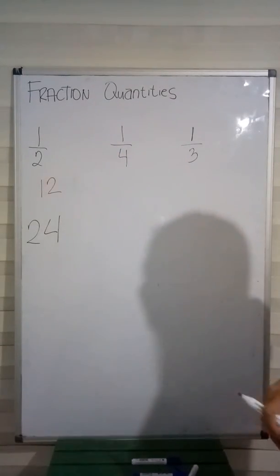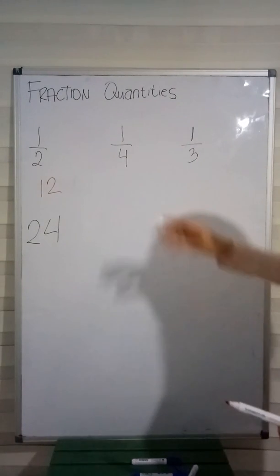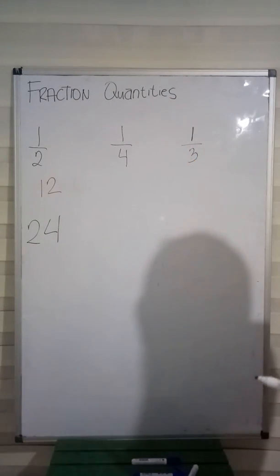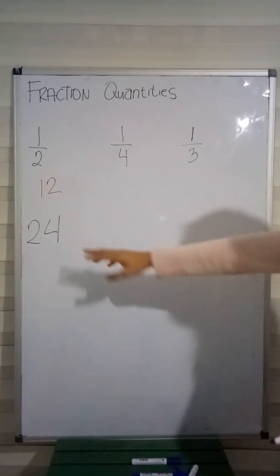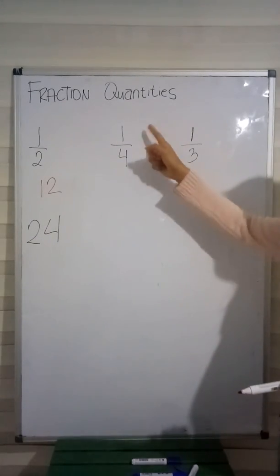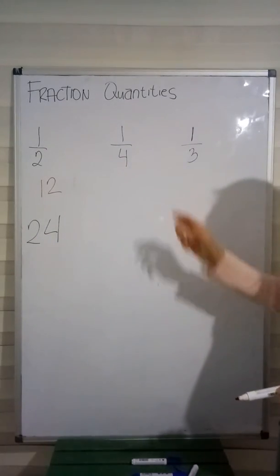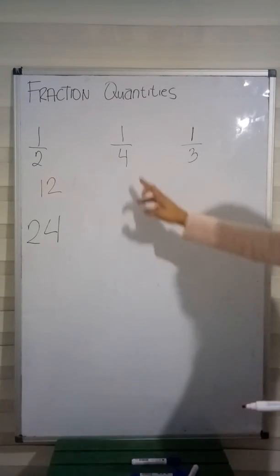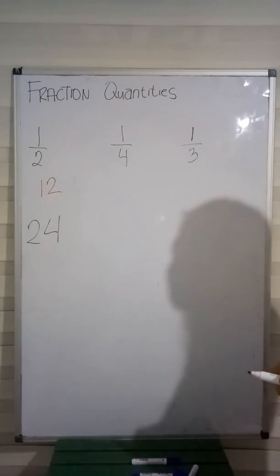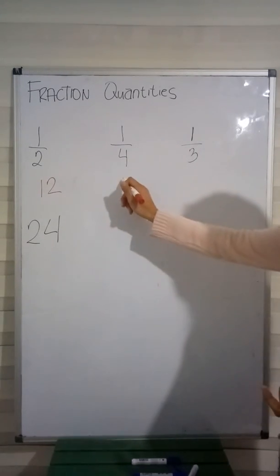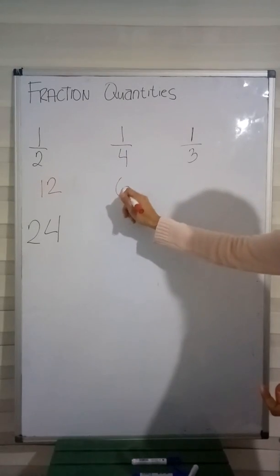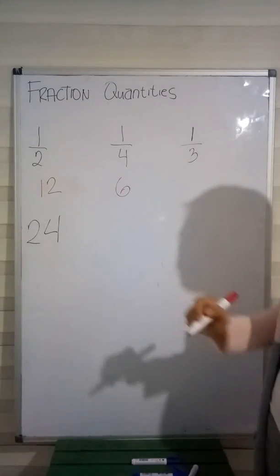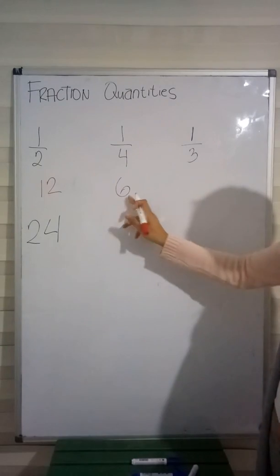What about 1 fourth? How do we get the 1 fourth of 24? Again, we just divide 24 by our denominator, and for 1 fourth we have 4. So, 24 divided by 4 — the answer is 6. Therefore, 1 fourth of 24 is 6.